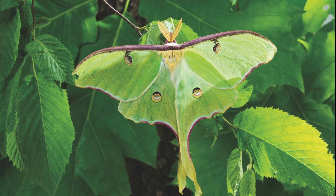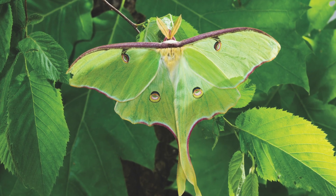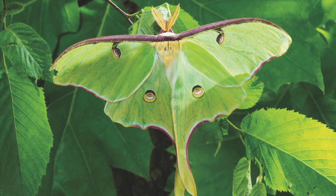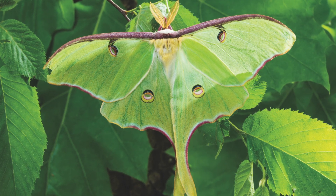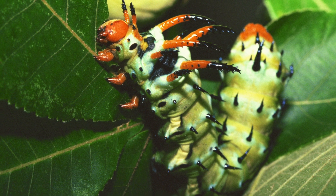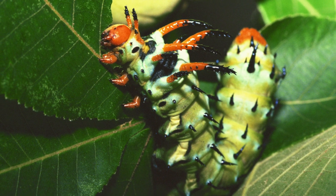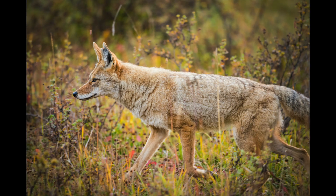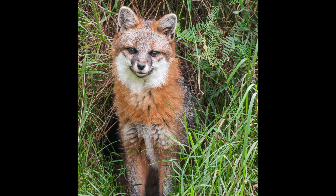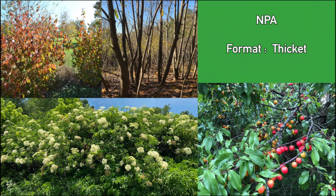Luna moths are one insect that hosts on persimmon trees. They can exceed seven inches across and are one of the largest moths in North America. Like all giant silk moths, luna moths spin silk and leaves into a cocoon to overwinter inside. Hickory horn devil caterpillars also feed on persimmons, as well as hickories, walnuts, and pecan trees — they appear ferocious but are harmless. Canines such as wolves, coyotes, and foxes help control rodents and deter other small animals that may lower yields of native plant agriculture crops. Since their diet is largely carnivorous, they will not take enough fruit to impact crops in an NPA format.